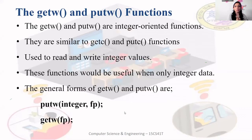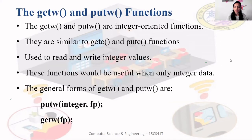getw and putw are integer-oriented functions. getc reads a single character; getw reads a single integer from a file. To write an integer to a file, we use putw. The syntax for putw is: putw(integer, fp), where you specify which integer you want to write to the file pointed by fp. getw reads an integer from the file pointed by fp.